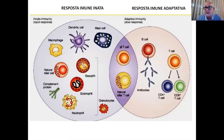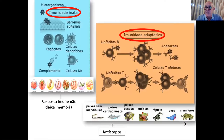A resposta imune adaptativa ou específica depende da presença de linfócitos T e B, e é sempre posterior à resposta imune inata. Isso é uma repetição do que aconteceu durante a evolução: a imensa maioria dos animais vive apenas com resposta imune inata, enquanto que a partir de peixes cartilaginosos, anfíbios, répteis, aves e mamíferos, todos temos capacidade de produzir anticorpos — um refinamento da resposta imune.